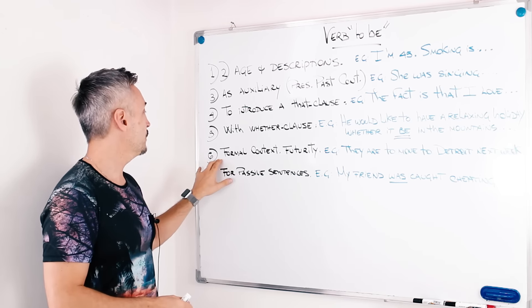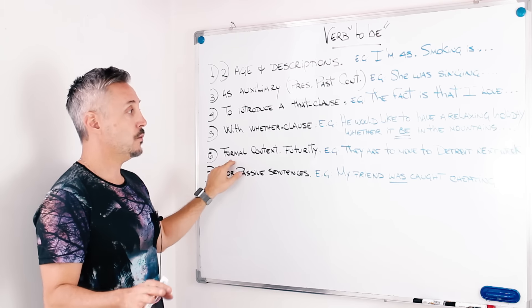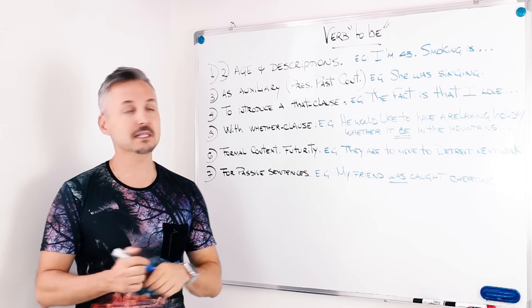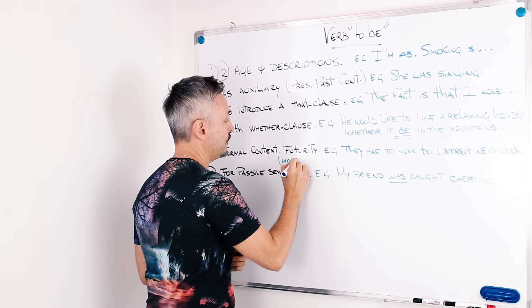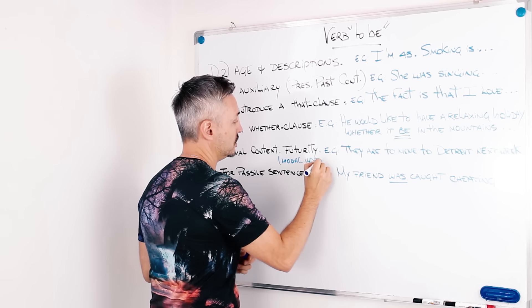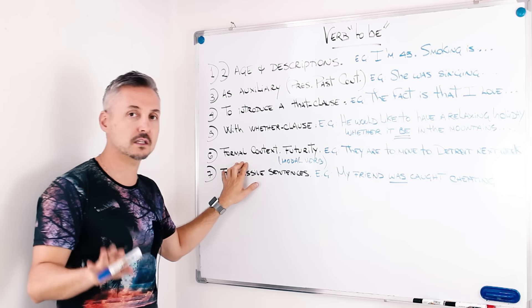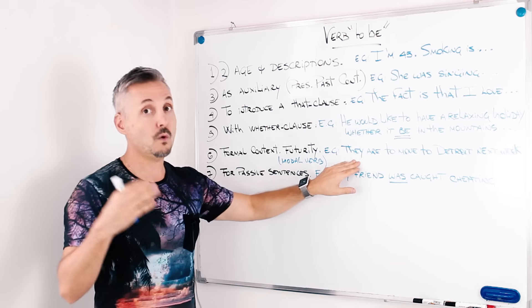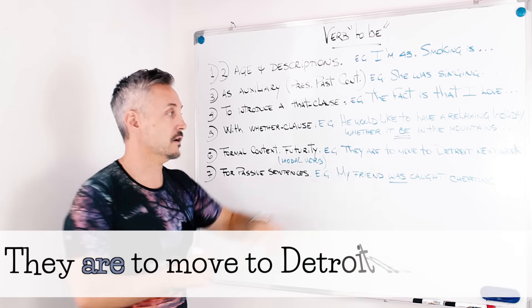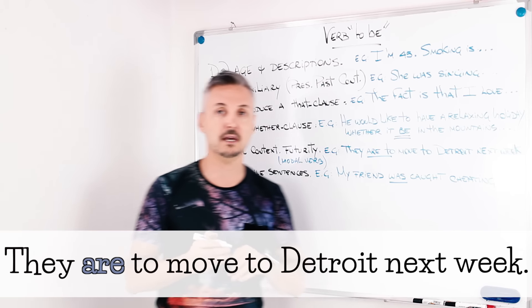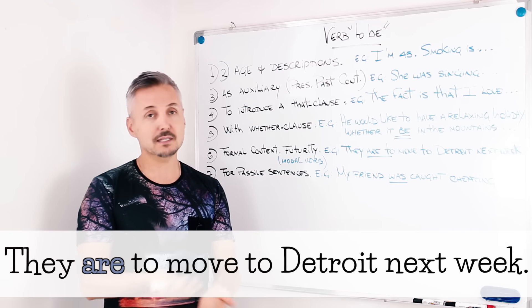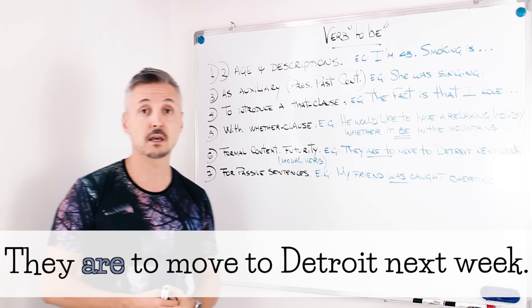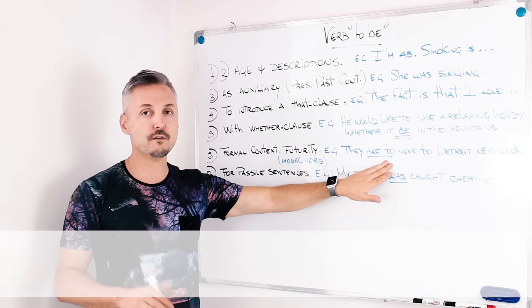Now, for formal contexts, we use the verb to be, and so it means a modal verb here. Here it turns into a modal verb. This is a formal context. So it's not that used, but in formal context, we use it. So, they are to move to Detroit next week. So that means, it is the same as saying, they are going to move to Detroit next week. It's the same. It's just that this is more formal.